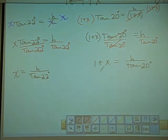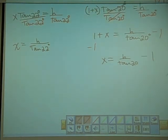Okay, we're still trying to solve for x. So if we subtracted 1, apply to minus 1, minus 1 to both sides. And we get x equals to h over tangent 20 degrees minus 1. Well, this is x equals to h over tangent 22. So what we're going to do.